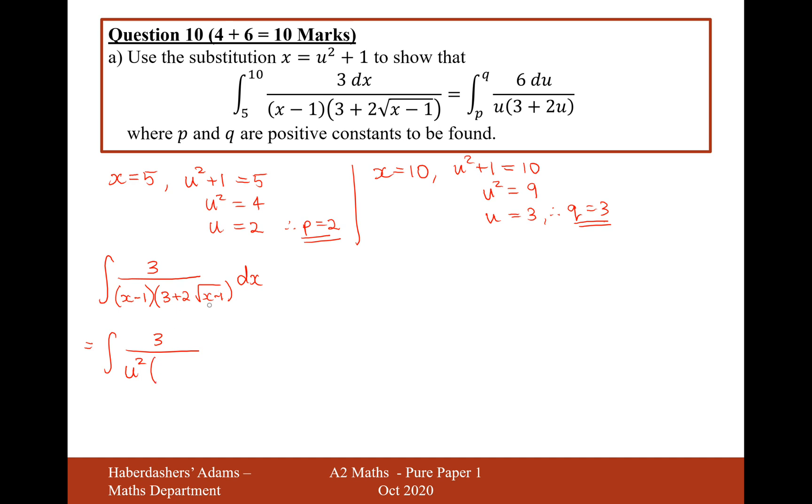And then on the second bracket, it's going to be 3 plus, now if we minus the 1 on the other side of this substitution, it's going to be x minus 1 equals u squared. So it's going to be the square root of u squared, which is just u. And then we need to change the dx into a du.